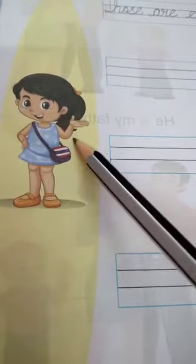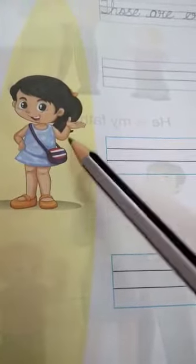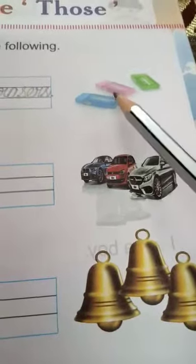Isn't it? See, this girl is showing her hand like this. Those pictures are far away from her. So, you have to write, what pictures are these children?